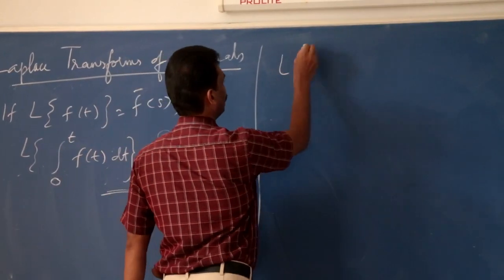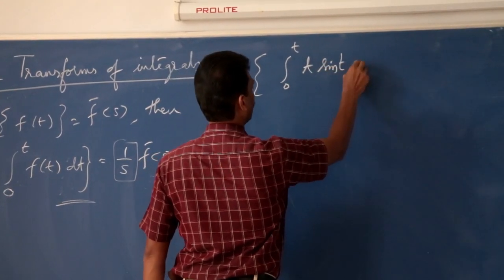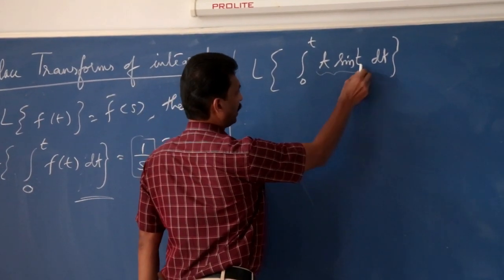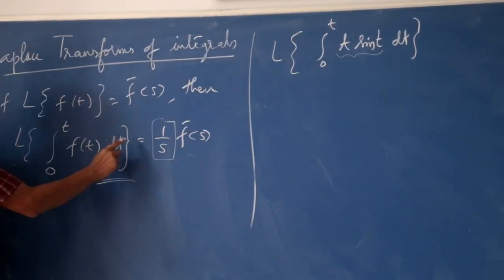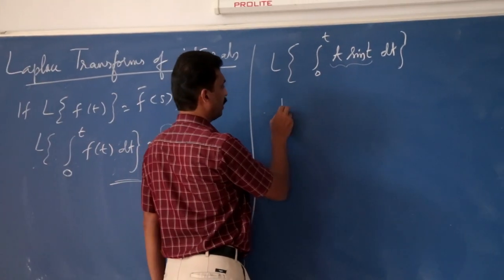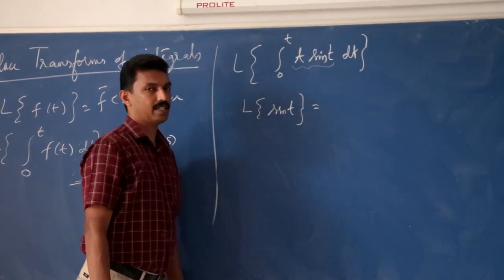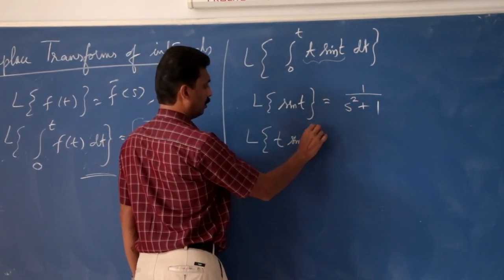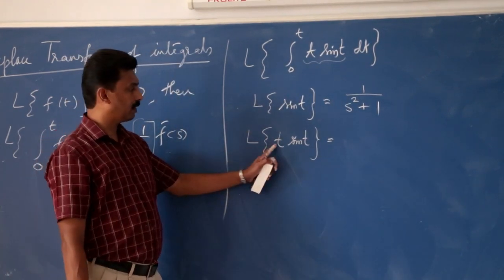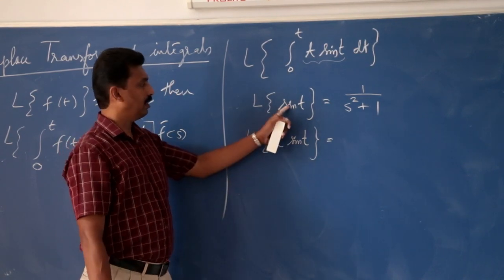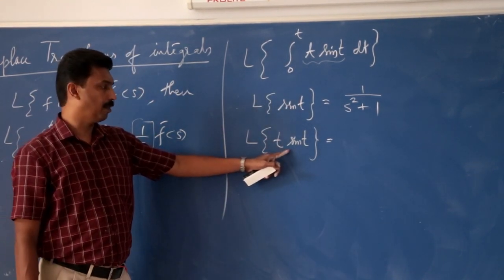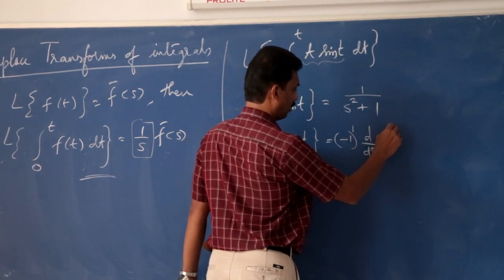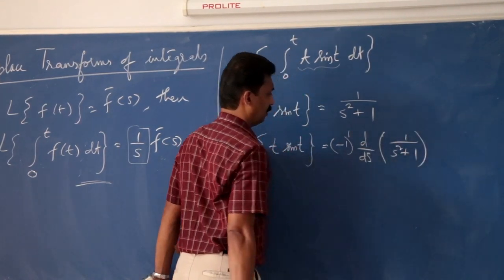Find the Laplace transform of the integral from 0 to t of t·sin t dt. First, we find the Laplace transform of sin t, which is 1 divided by s² + 1. Therefore the Laplace transform of t·sin t — multiplying by t raised to 1 — uses the property that it equals (−1)¹ times the first derivative of the transform of sin t.